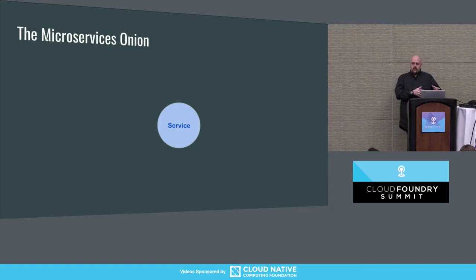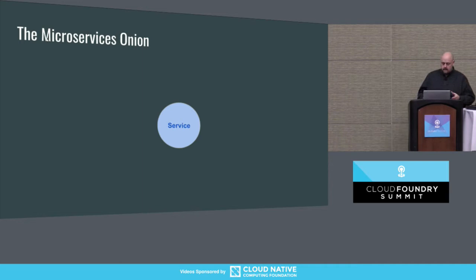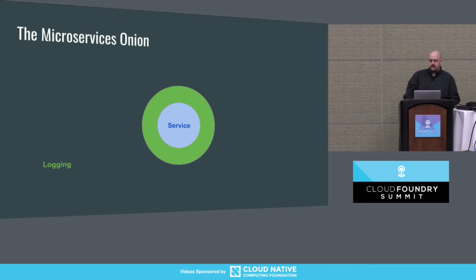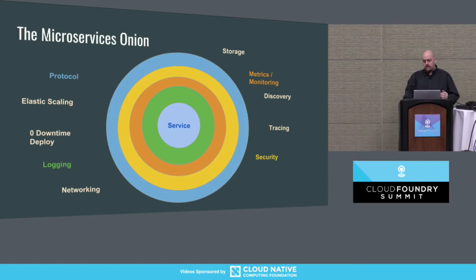I wanted to describe the microservices onion. On the inside is the service — your real business logic. Then we have non-functional requirements like logging, metrics, monitoring, security, the protocol handler, and a bunch of other things like storage, discovery, tracing — a lot of the things we're talking about at the summit here. These are all things that are important, but we should not have to write code for them, and these things aren't in our service.